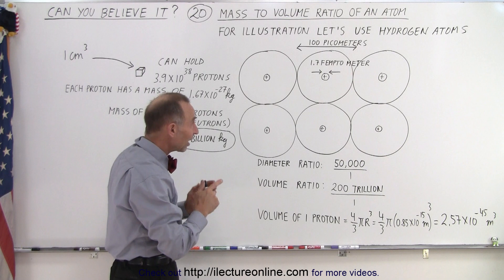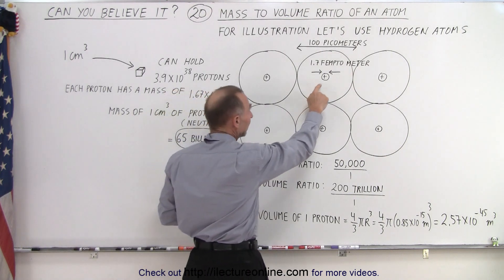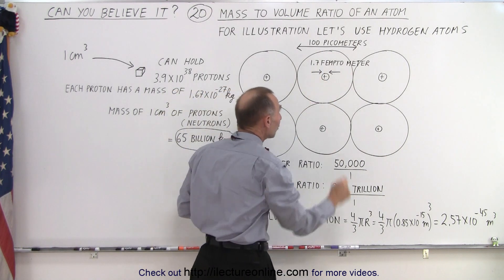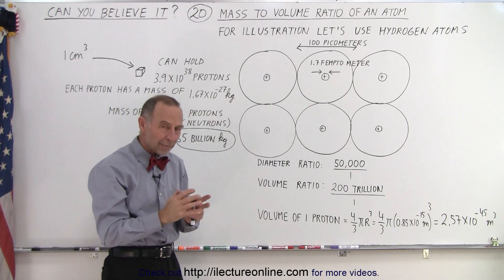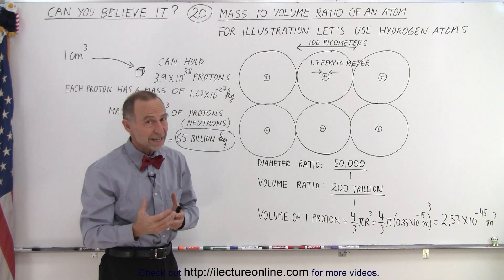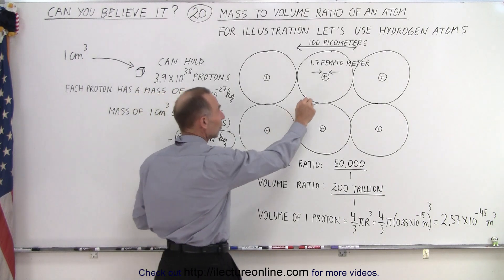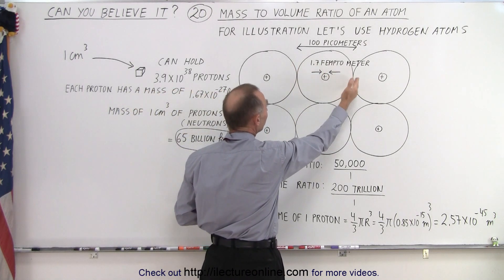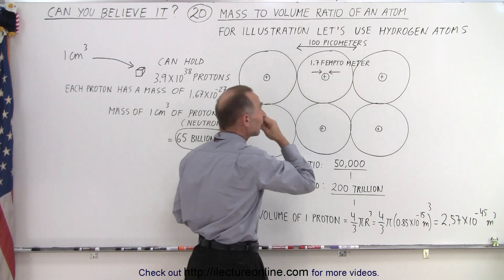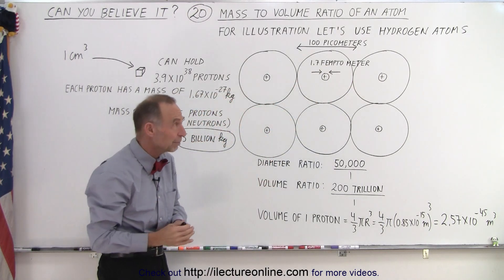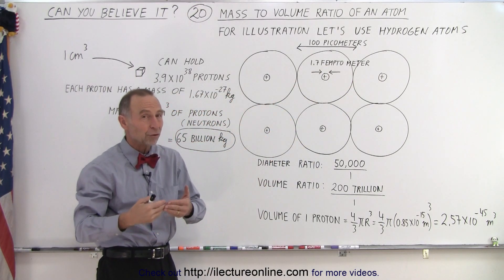Now the size of the nucleus in diameter is about 1.7 femtometers. A femtometer is 10 to the negative 15, so it's a very tiny object at the center of that nucleus. Then the diameter of the atom itself is about 100 picometers, about a tenth of a nanometer. A picometer is 10 to the minus 12.